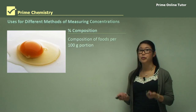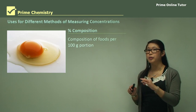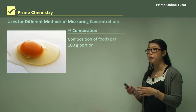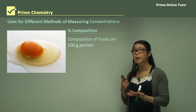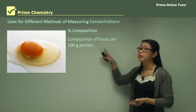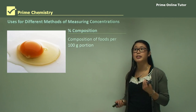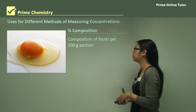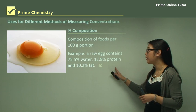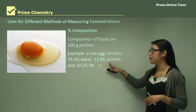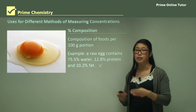Percent composition is usually used for foods, looking at a per 100 grams portion. If you look at a box of cereal or any food label, it will tell you how much sodium chloride, sugar, or fat is present, expressed as a percent composition per 100-gram serving. For example, a raw egg contains 75.5% water, 12.8% protein, and 10.2% fat.